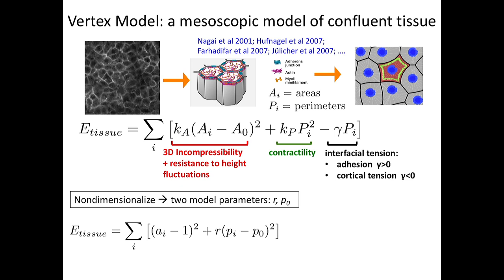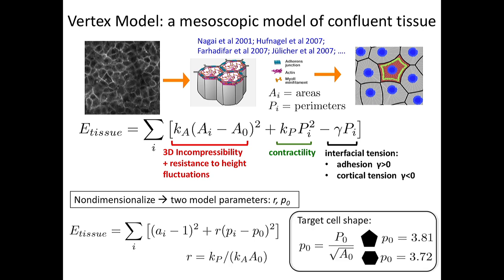Using √A₀ as the unit of length and completing the square in the perimeter, the energy becomes quadratic in both area and perimeter, with two dimensionless parameters: the ratio Kp/Ka, and—most importantly—the ratio of the target perimeter to √(target area), which I call the target cell shape index P₀. This measures how anisotropic the cell is. For a circle it is about 3.54, for a regular pentagon it is 3.81, for a hexagon 3.72. The more elongated the shape, the larger P₀.